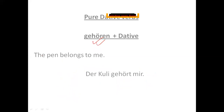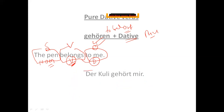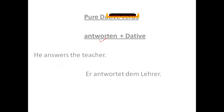The next verb is 'gehören,' which means 'to belong.' It is a pure dative verb. For example, 'the pen belongs to me': 'der Kulli' is the subject (nominative), 'gehört' is the verb, and 'mir' is the dative object. Because 'gehören' is a pure dative verb, whatever comes as the object is treated as dative.